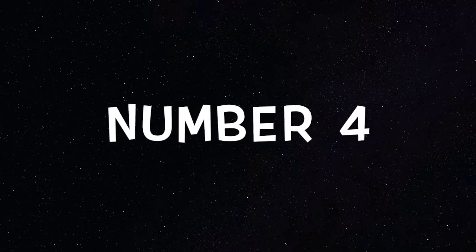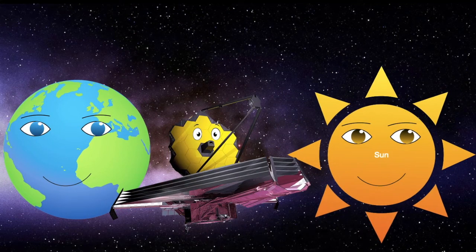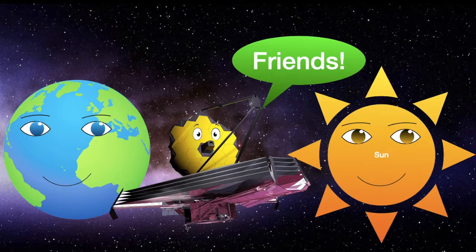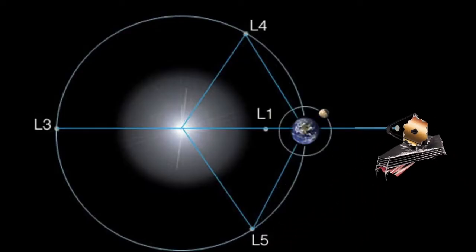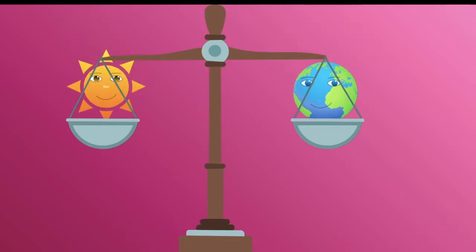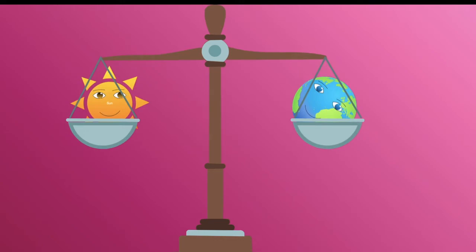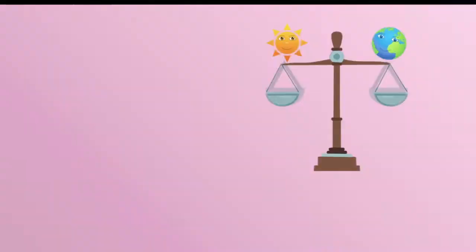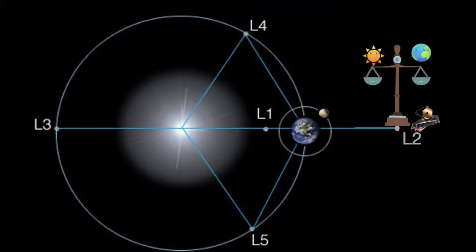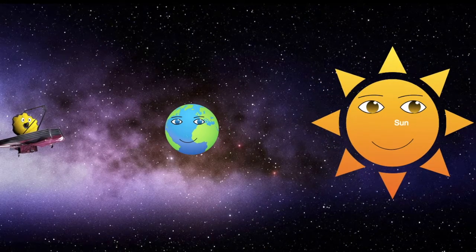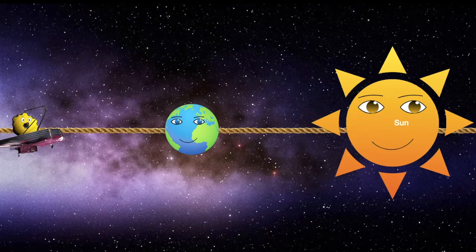Number 4. The James Webb Space Telescope is made to orbit the sun while being in touch with the Earth. Number 5. The James Webb Space Telescope will be placed at the second Lagrange point. A Lagrange point is a point in space where the gravitational forces of two or more celestial objects balance each other. At the second Lagrange point, the Earth and the sun's gravitational forces balance out, allowing the James Webb Space Telescope to fix itself relative to the two bodies.